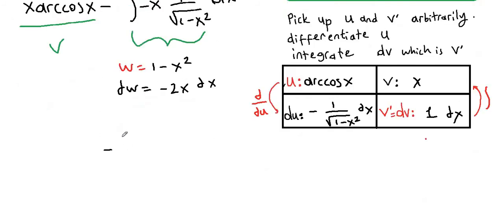So, negative integral of negative x times one over square root of w. And here, if you solve for dx, dx will be equal to negative dw over 2x. So instead of dx in our integral, we're going to write negative dw over 2x.